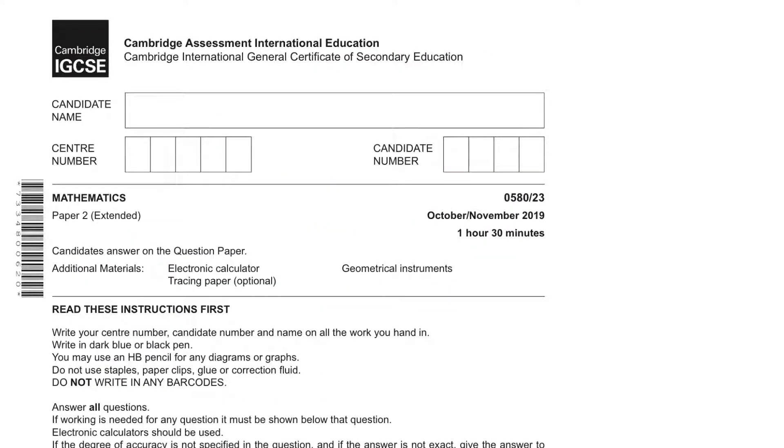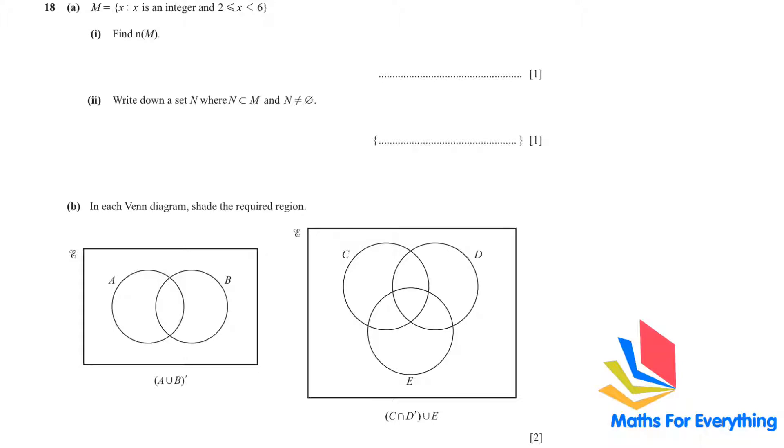In this lesson we will continue to solve Cambridge IGCSE mathematics paper 2 extended, variant 2-3, October-November 2019 from question number 18 onwards. This is a set question.